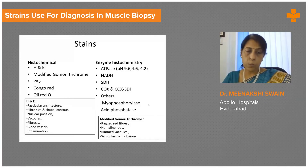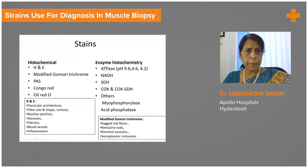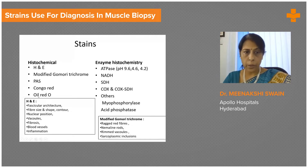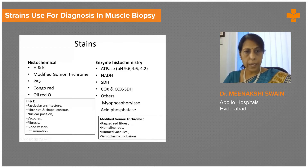An array of stains are used for diagnosis in muscle. Basic histochemical stains include H&E and a modified Gomory trichrome, which are extremely essential. As identified, a PAS, a Congo red, or an oil red O could be used depending on the features that are seen on these two. The H&E features have already been elaborated and shown earlier, so we won't go into that.